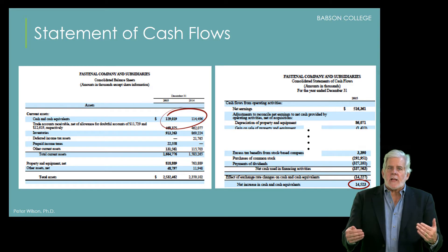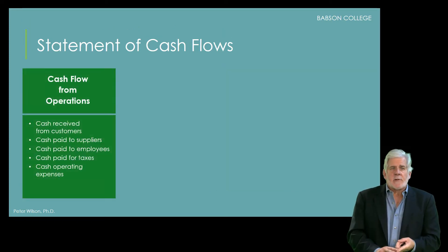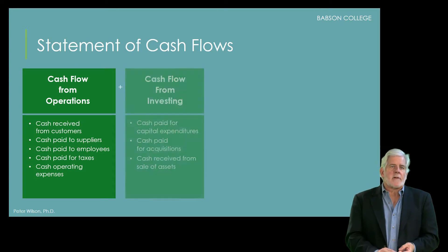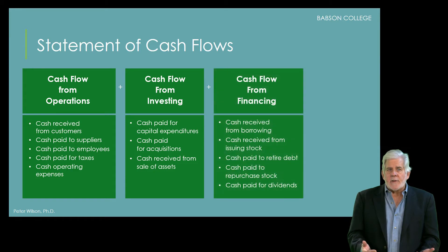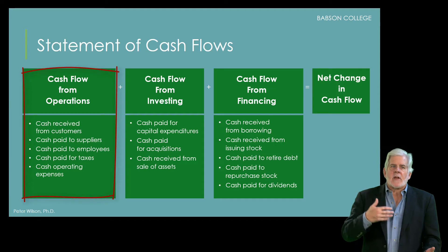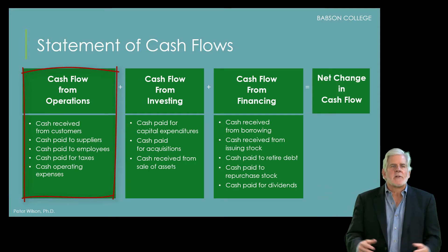The cash flows are classified into one of three categories: cash flows related to operating activities, cash flows related to investing activities, and cash flows related to financing activities. Operating activities are those directly related to your primary sales activities — things like cash received from customers, cash paid to employees, suppliers, and anyone else that supports your operating activities.